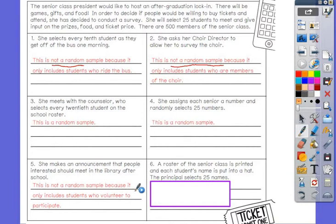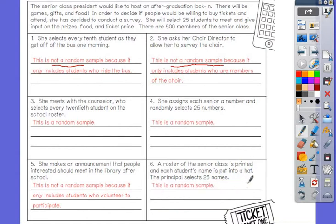Six, a roster of the senior class is printed and each student's name is put into a hat. The principal selects 25 names. That is a random sample. Everybody had a fair chance to win. Random sampling is pretty easy as long as everybody is getting a fair chance.